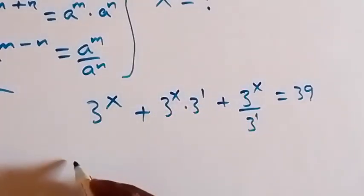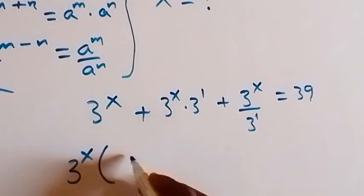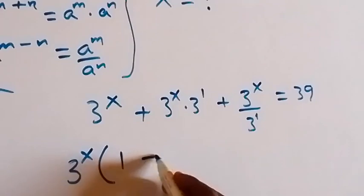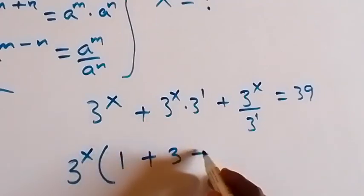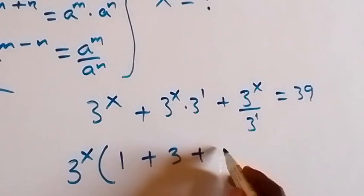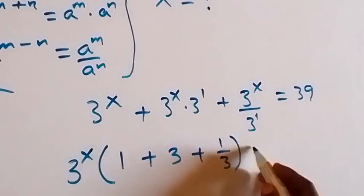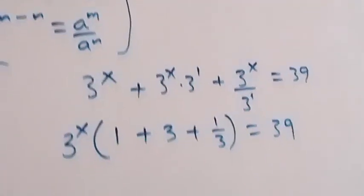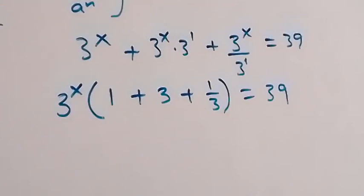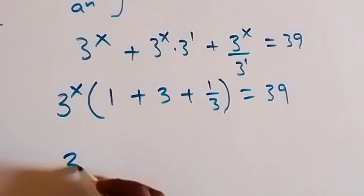When we factor this out, we have 3 raised to power x into bracket. What we are left with here will be 1, plus 3, plus 3 raised to power x over 3 raised to power x — which equals 39.